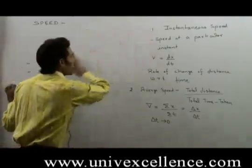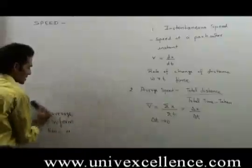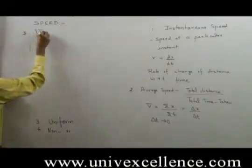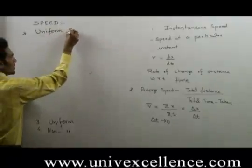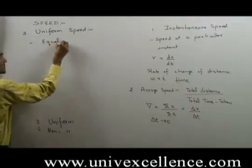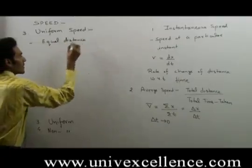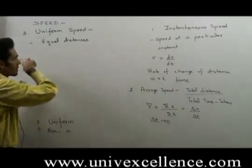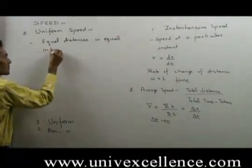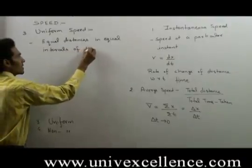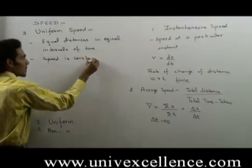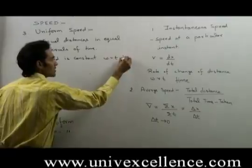Uniform speed: when the speed of an object is not changing with respect to time, it means its speed is uniform. Uniform speed means the object is covering equal distances in equal intervals of time. In other words, the speed of the object is constant — speed is constant with respect to time, or its speed is not changing with respect to time.